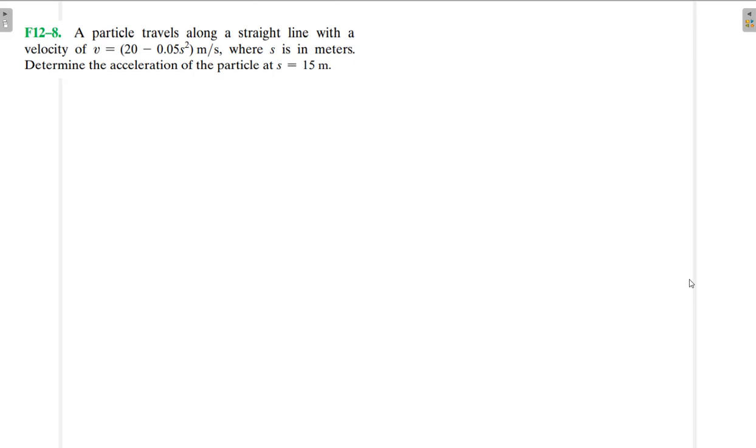Hello, I welcome you all to this another interesting screencast. We're going to be solving this engineering mechanics problem. It reads: a particle travels along a straight line with a velocity of v = 20 - 0.05s² m/s, where s is in meters.